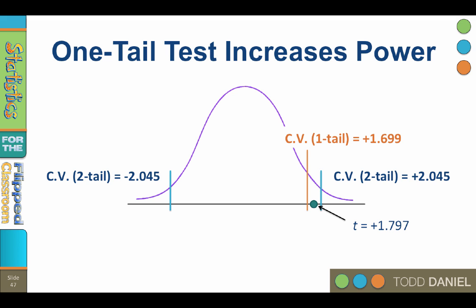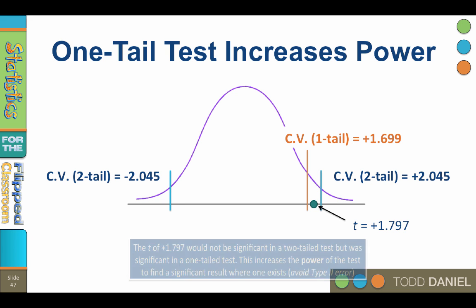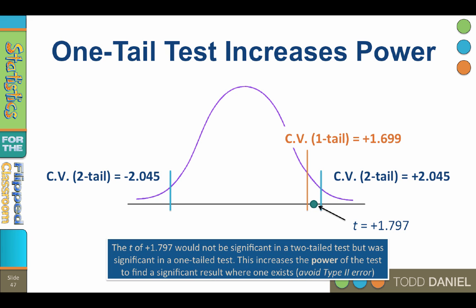Now let's add our t-value. The t of positive 1.797 would not be significant for the two-tailed test with the blue fences, but it was significant for the one-tailed test with the orange fence. Using a one-tailed test increases the power of a test to find a statistically significant result where one exists. In other words, to avoid a type 2 error.